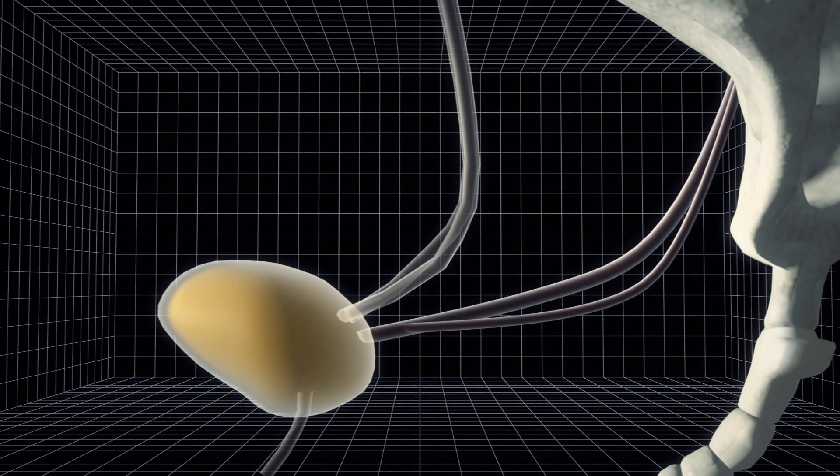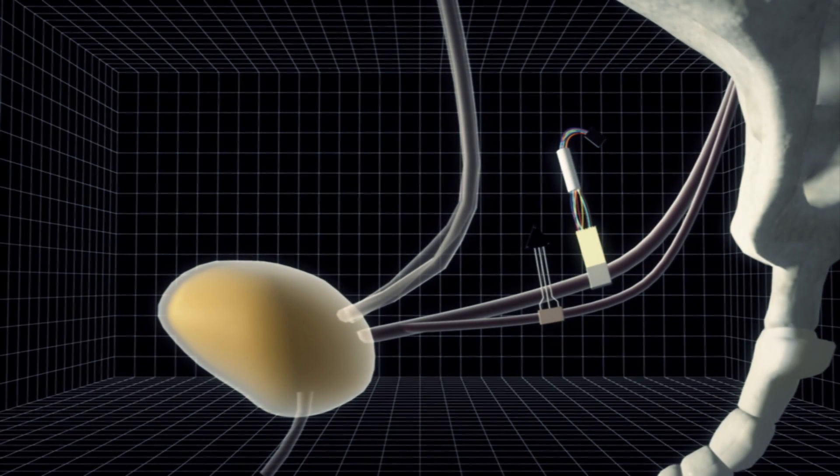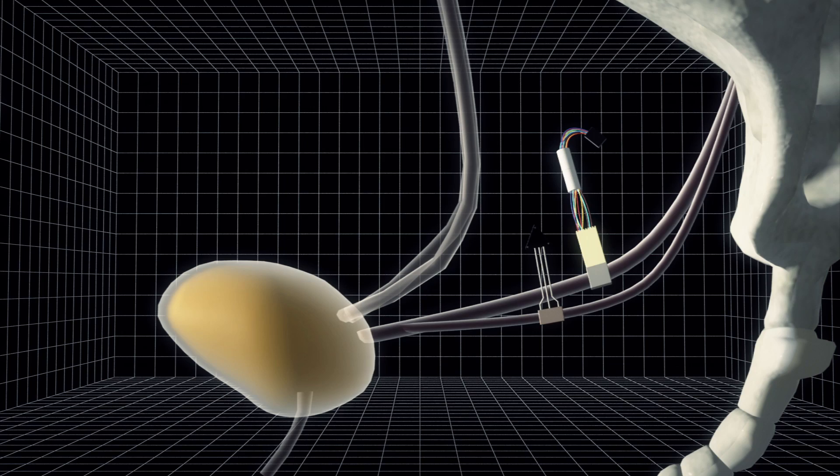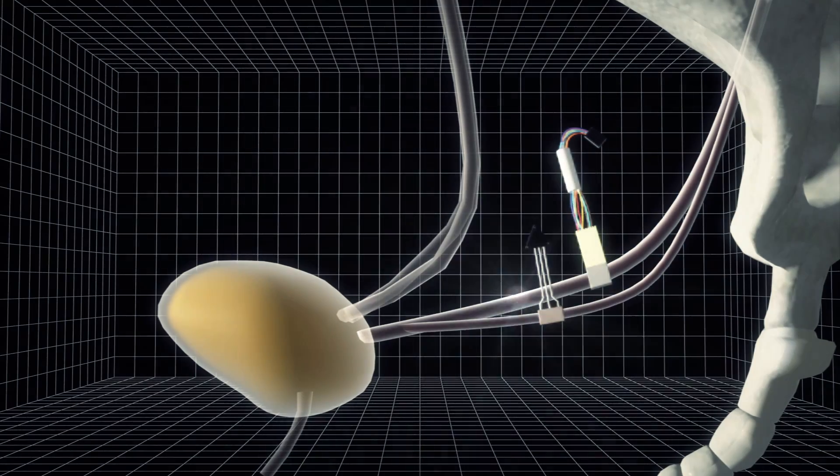A neuroprosthetic can intercept the bladder's outgoing fullness signals and command the bladder to contract. When the device detects a full bladder it sends an alert to an external sensor and returns the signal to the bladder to prevent it from emptying.